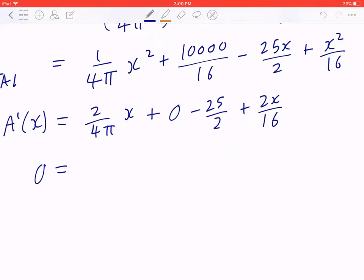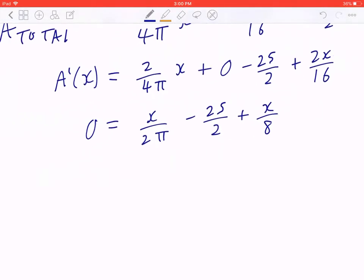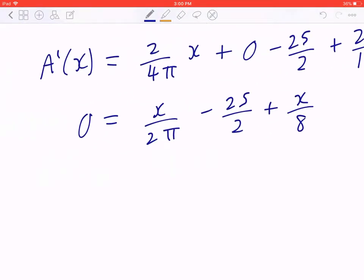When you set this to 0, your goal is to solve for x. So in the first part, that's going to be x divided by 2 pi minus 25 divided by 2 plus x divided by 8. You can bring negative 25 over 2 to the left. You can factor x to the front from the right. So in brackets, it's going to be 1 divided by 2 pi plus 1 over 8.